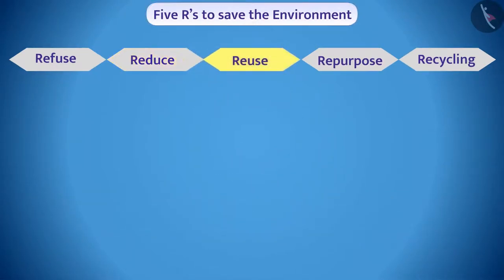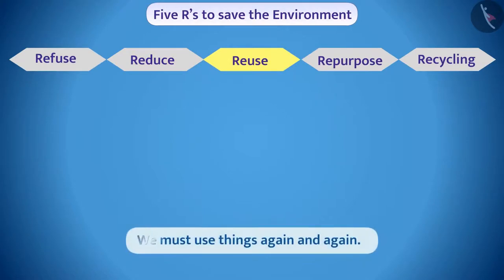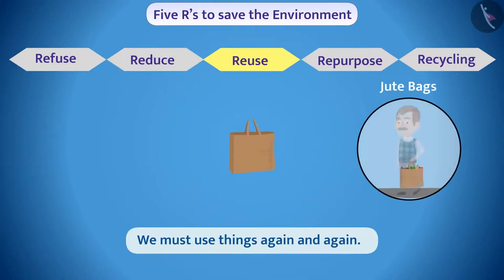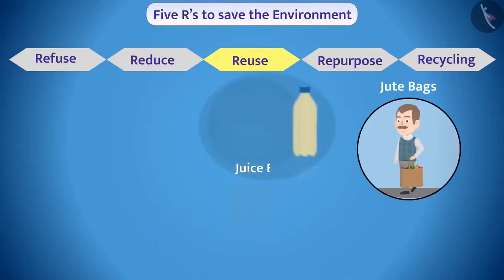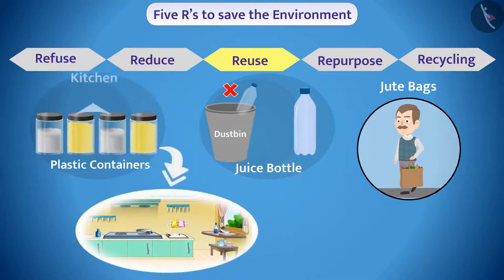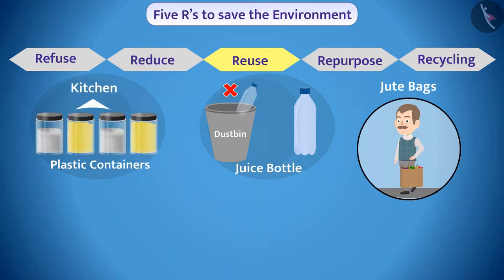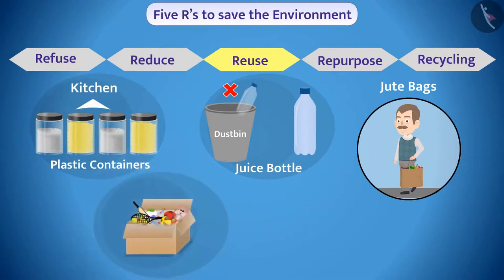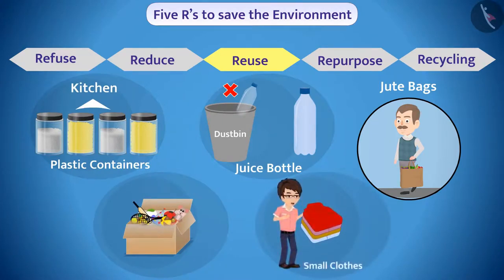The third R is Reuse. We must use things again and again. For example, a jute bag can be used repeatedly to carry things. Instead of throwing away a juice bottle, we can use it to store water. Plastic containers can be used to keep things in the kitchen. You can also use boxes from packaging to store things. Clothes which do not fit us can be given to the needy.